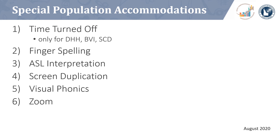The guidance provided in Appendix E and F of the IRI TAM outlines accommodations only available to students who are deaf, hard of hearing, or blind and visually impaired. These accommodations are only available to specific populations. Turning the timer off for IRI is not an allowable accommodation for all students on an IEP. The timer may only be turned off for students identified as deaf, hard of hearing, blind, visually impaired, or those with a significant cognitive disability. Turning the timer off on the IRI means that the norm reference score is no longer comparable to the student's grade level peers.